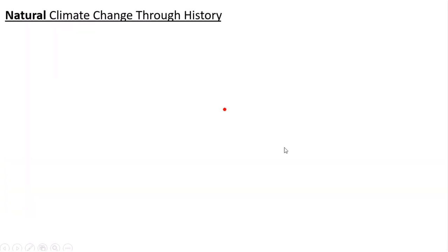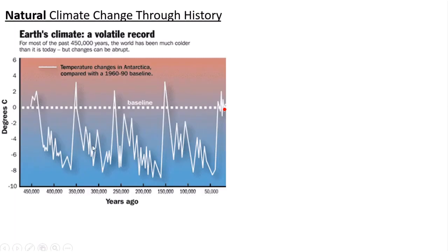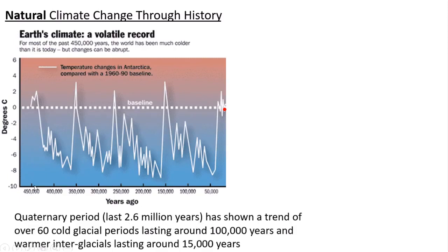Looking at how climate has changed through history, this diagram shows the last 500,000 years or so of records obtained from ice cores. Most of the temperature line is below zero — so actually most of Earth's history has been a cold planet. In the last 2.6 million years there have been around 60 cold ice ages or glacial periods, and they tend to last about 100,000 years each. In between these, you get interglacial periods that last maybe 10,000 to 20,000 years — much shorter, but still a very long time for humans.